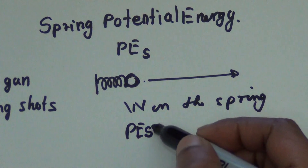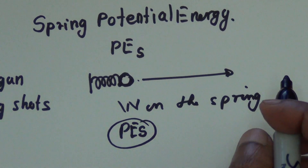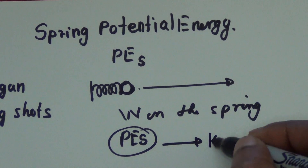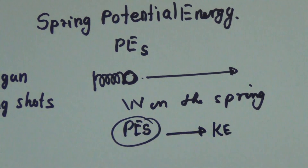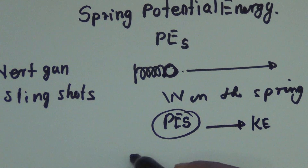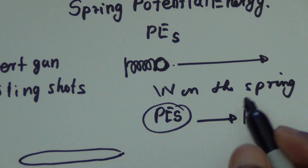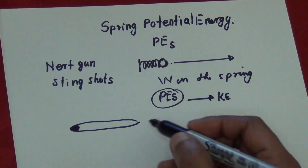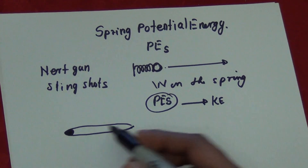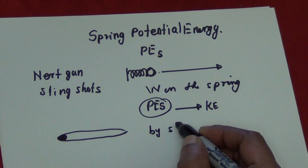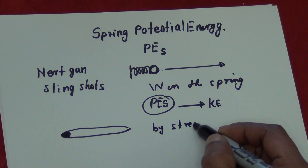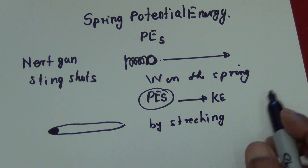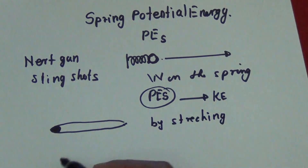By compressing that, you stored potential energy. When you release, this potential energy is converted into kinetic energy. If you take a slingshot, you are stretching it, there is a stone or something, and then you release. By stretching, you are storing energy. So all these come into the category of springs.